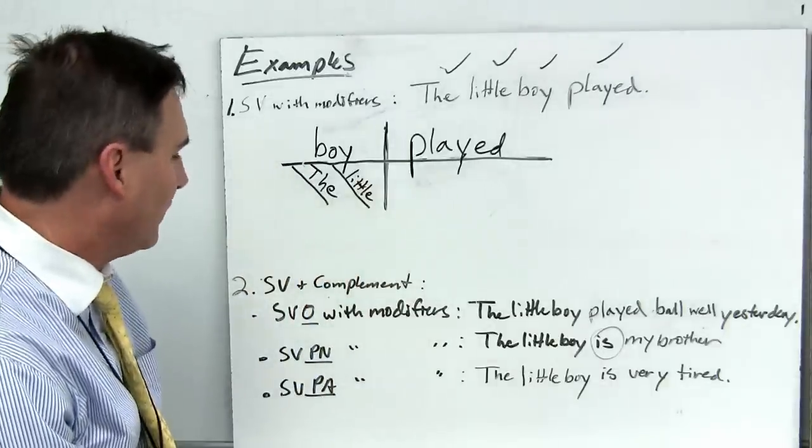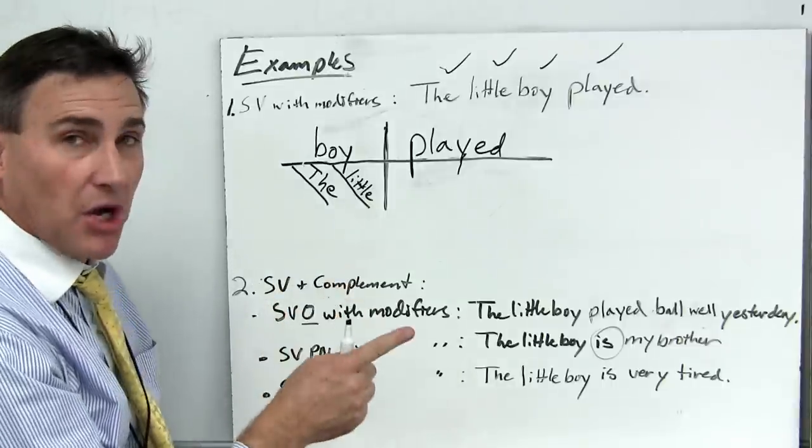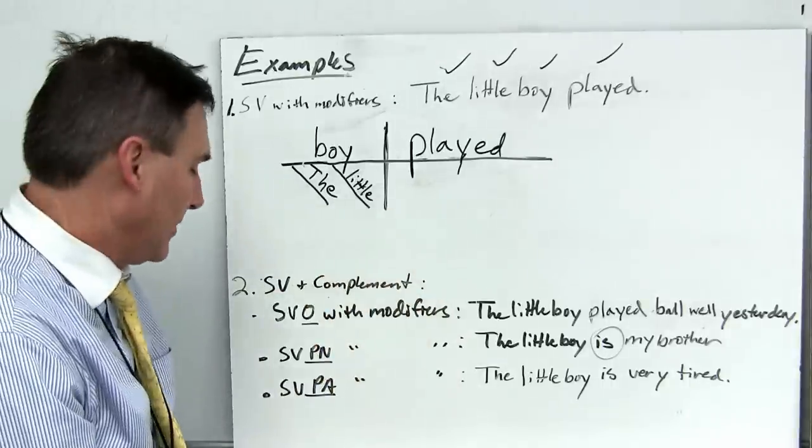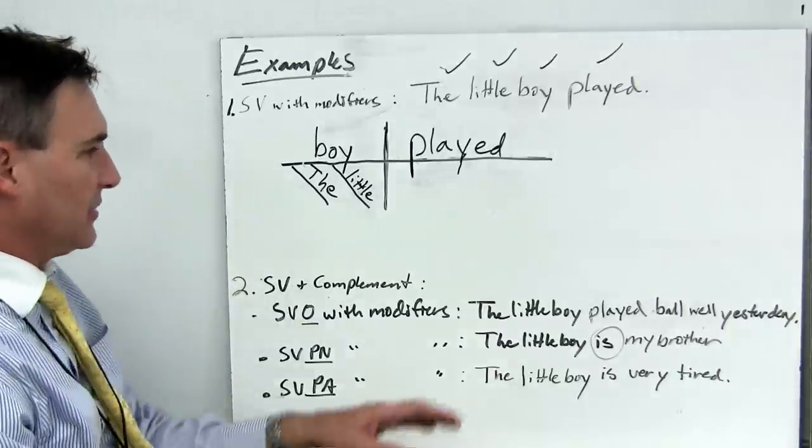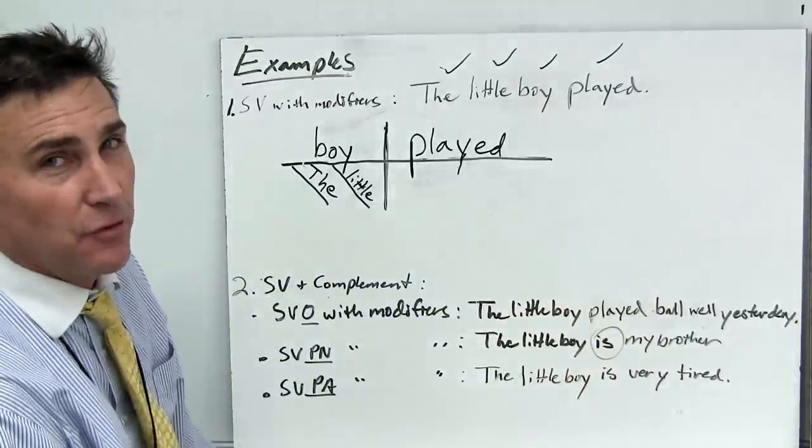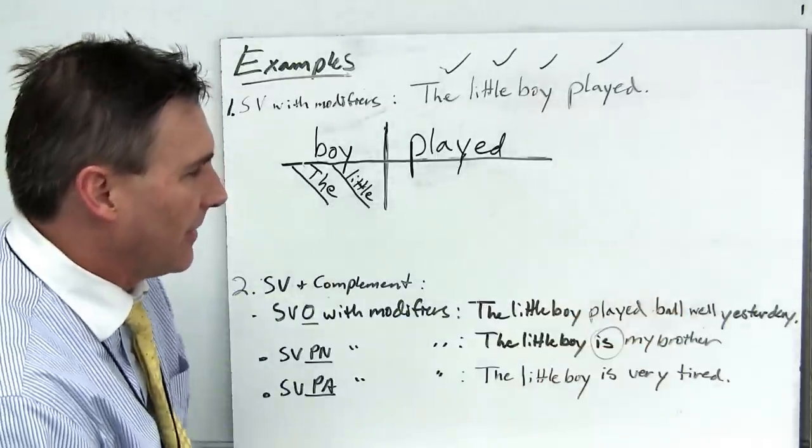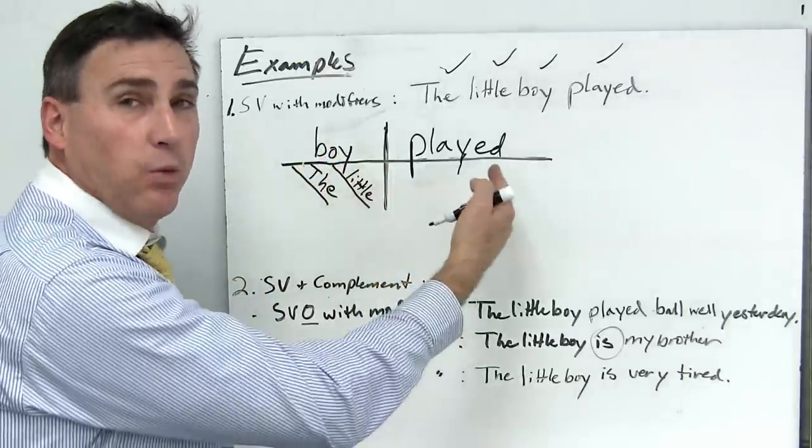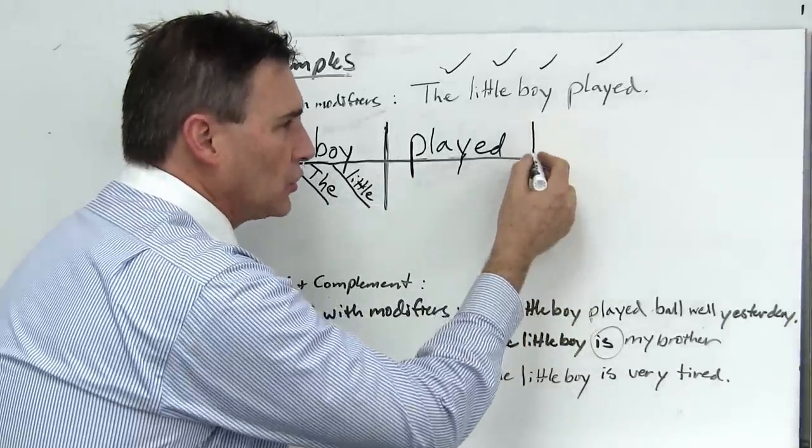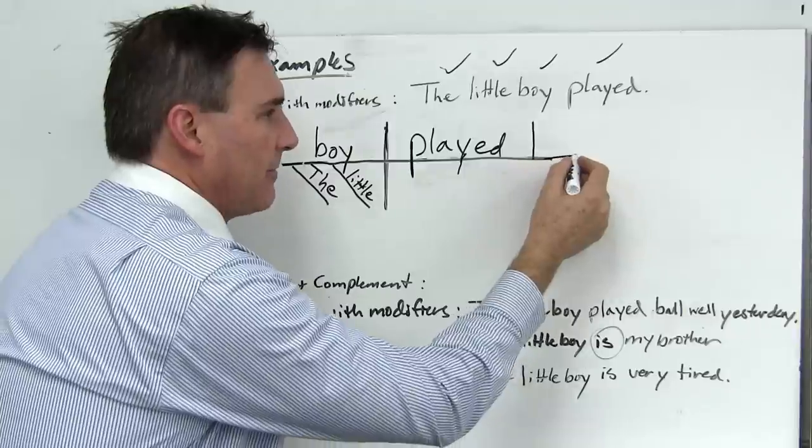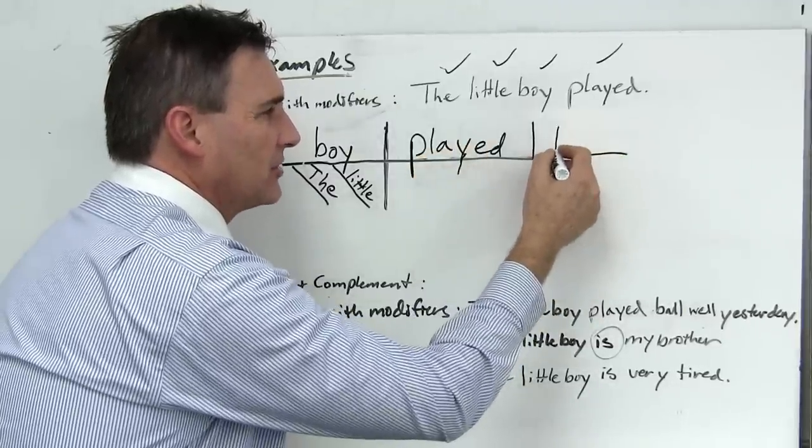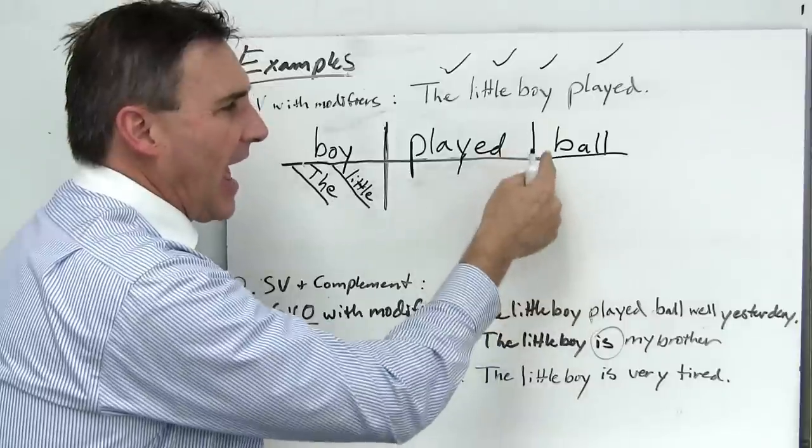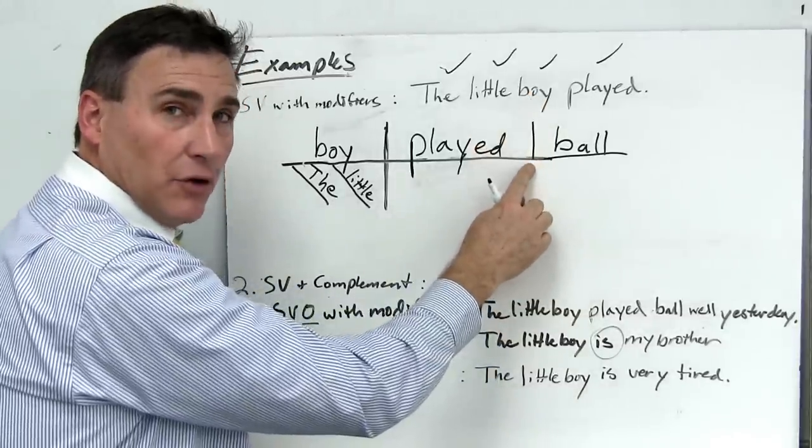Let's go forward and try some other things. Let's try a subject verb sentence with some compliments. We'll try both verb compliments and subject compliments. Start with a verb compliment. The little boy played ball well yesterday. So the little boy played. That can stay the same. But we're adding an object. Played what? Played ball. So I put another vertical line to separate out the verb and its object. The boy played what? Played ball. This is a direct object.